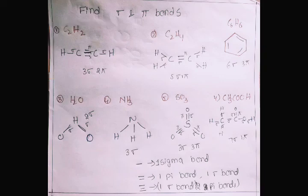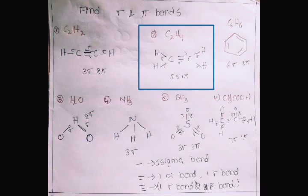Here C2H4 — four hydrogen bonds are sigma bonds. The C–C double bond gives one sigma and one pi bond. So counting all: five sigma bonds and one pi bond in C2H4.